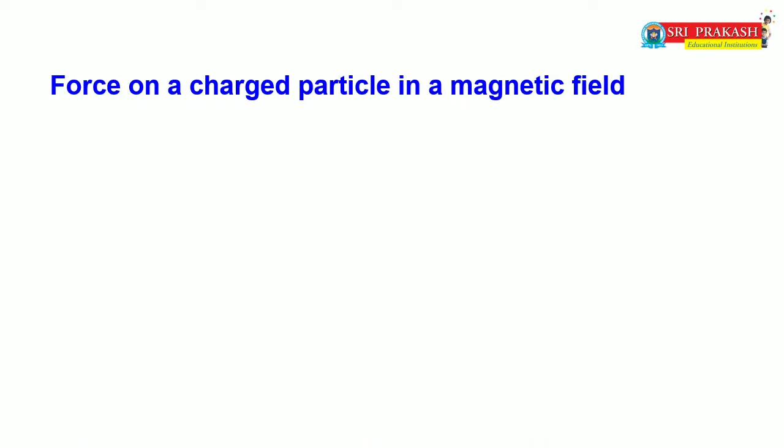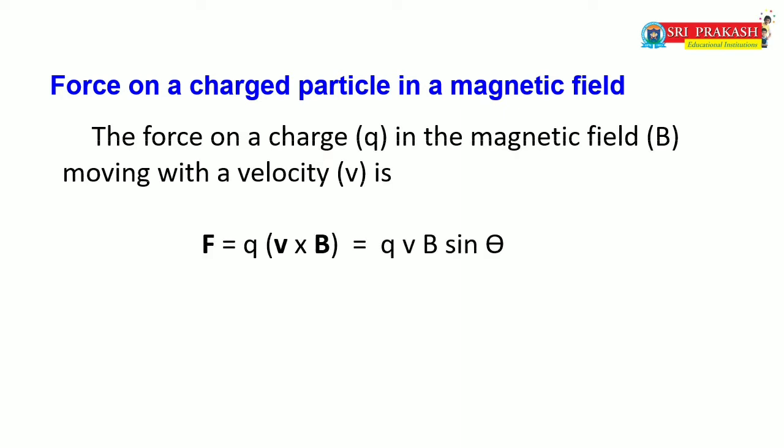Namaste students, this is Chalpathy, Faculty in Physics. I am going to explain the details about force on a charged particle moving in electric and magnetic fields. To analyze this, imagine a charged particle entered in a magnetic field. There will be a force on this charged particle. The force on charge Q in magnetic field B moving with velocity V is given by F equals Q into V cross B, which gives QVB sinθ.